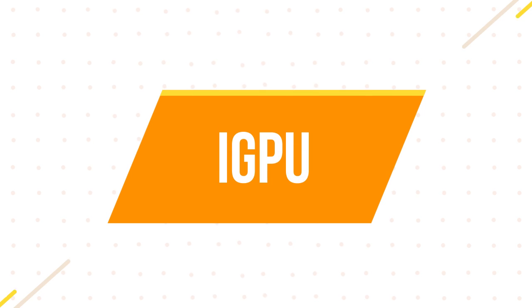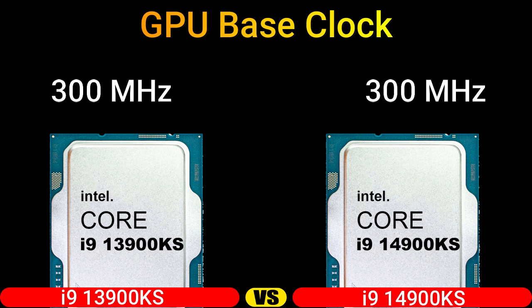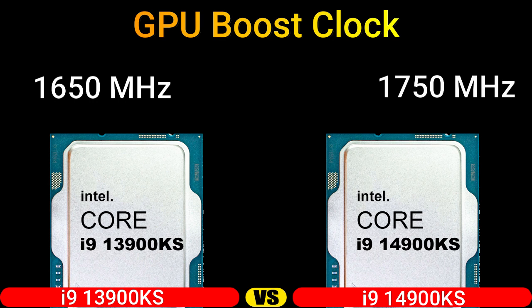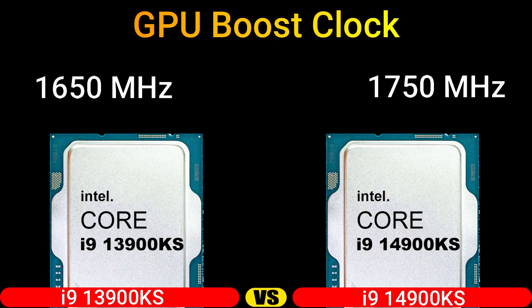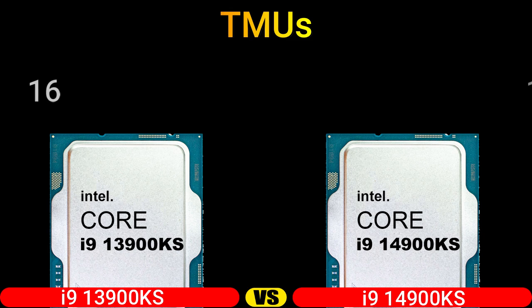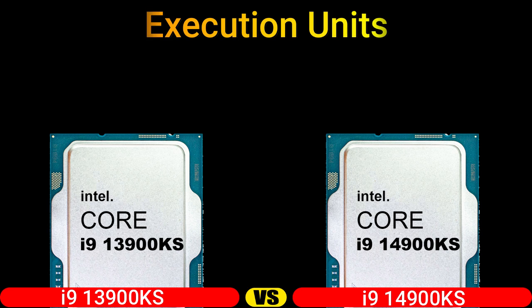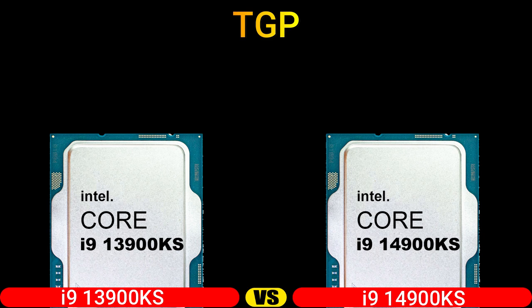Part 3: iGPU. GPU model, GPU base clock, GPU boost clock, shading units, TMUs, ROPs, execution units, and TDP.